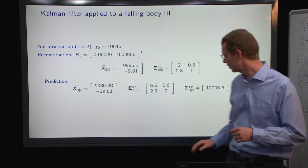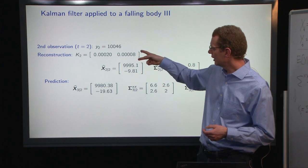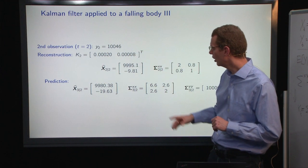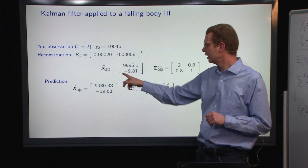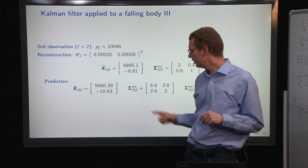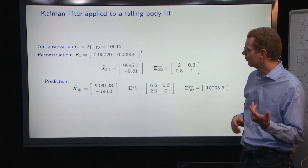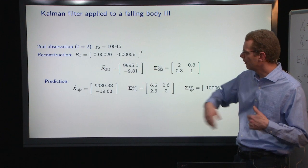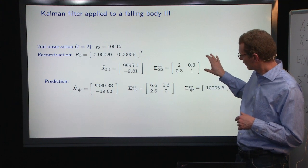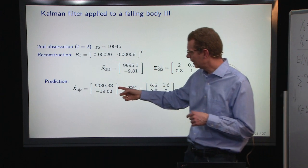The system is dominated by the observation noise. At the next time step, all of a sudden the Kalman gain is non-zero, though it's still small. We do the reconstruction where we update our estimate a little bit. Our estimate of the velocity becomes smaller because we got an observation above what was the point where we thought it would be.